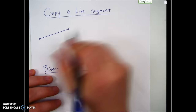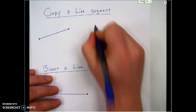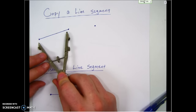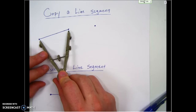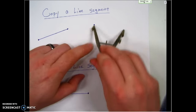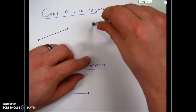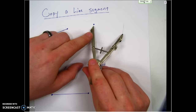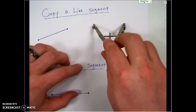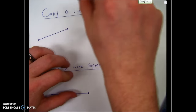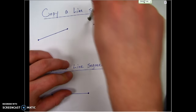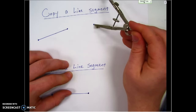If I want to copy this line segment — the length exactly — to some other point, it's just a matter of taking that width, which is now constant and not going to change, sticking my pointy end at my point, and drawing an arc. You remember with the compass, if I just draw an arc, I can draw the whole circle, but typically we only need one arc.